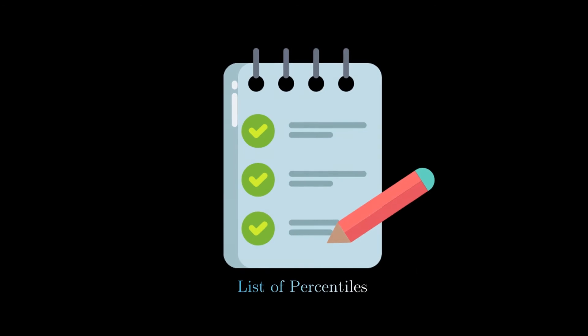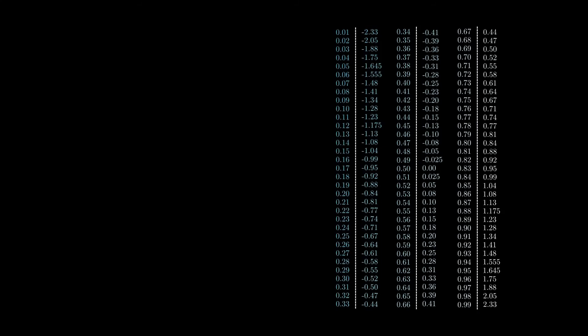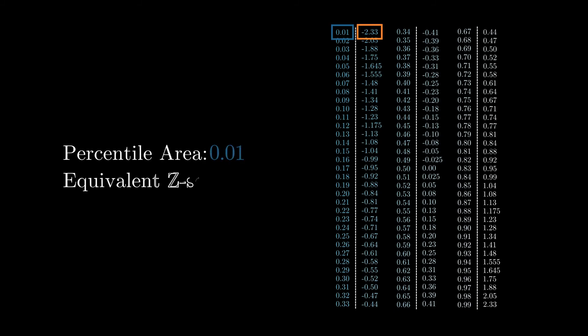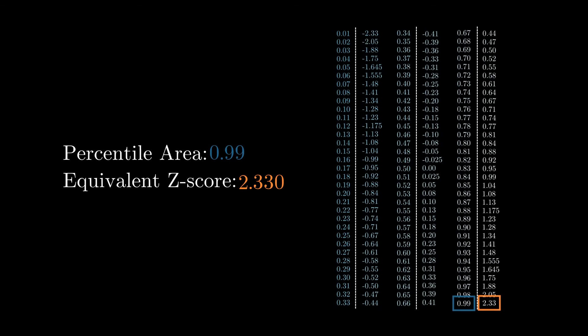Since these z-values are fixed for all percentiles under the standard normal distribution, we can list all of them in a table. For example, the first percentile corresponds to a z-value of negative 2.33. As we progress through the percentiles, this value increases and the sign changes as we cross the 50th percentile. This table is an easy tool to quickly find z-values for any percentile under the normal curve.